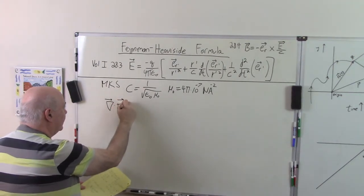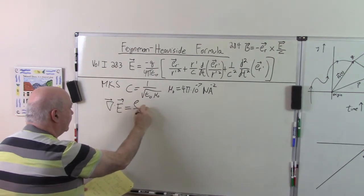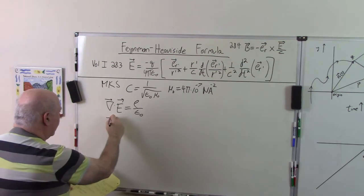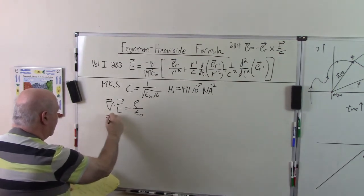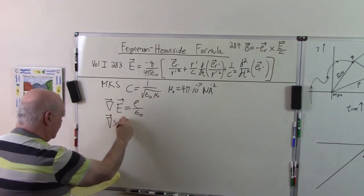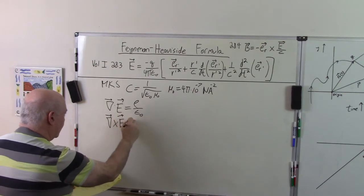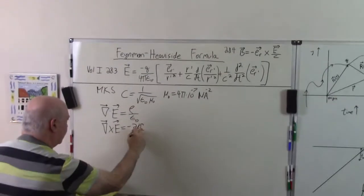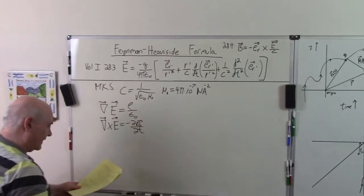So the divergence of E is the charge density over epsilon_0. That's Gauss's law. The curl of E is equal to minus the partial of B with respect to T. That's Faraday's law.